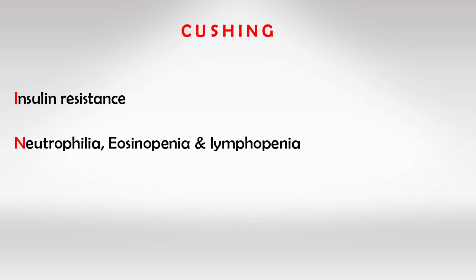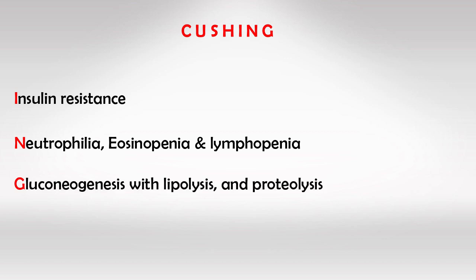Cortisol will cause neutrophilia because it inhibits migration of neutrophils. So the body responds to infections by increasing neutrophils that are unable to find the infection. Cortisol also causes the death of lymphocytes and eosinophils. And finally, G is for gluconeogenesis, with lipolysis and proteolysis.